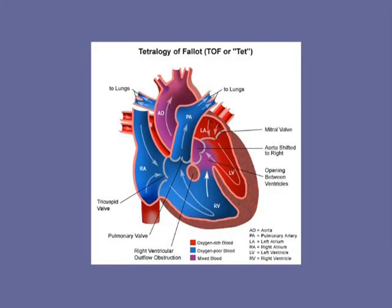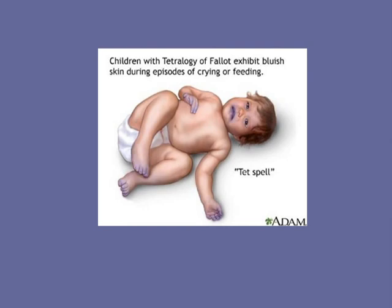Tetralogy of Fallot was described in the 1800s. The aorta overrides a ventricular septal defect — so you get mixed blood going in — there's pulmonic stenosis, a VSD, and an overriding aorta, producing a cyanotic defect. Typically a child with tetralogy has cyanotic episodes when they Valsalva or cry, getting bluish skin, particularly when they're upset.